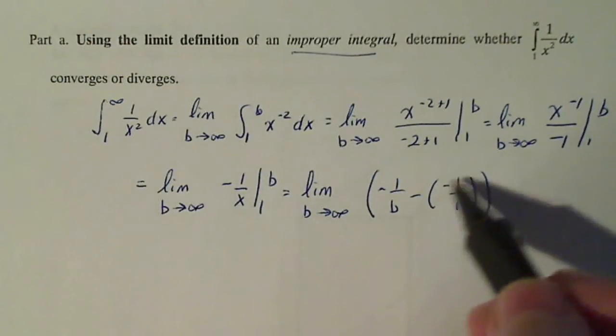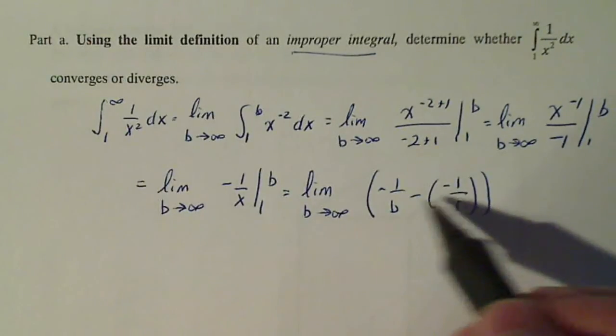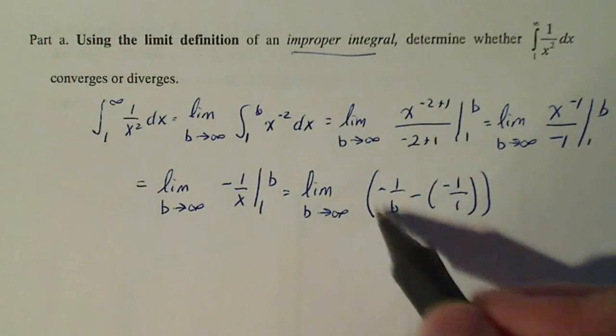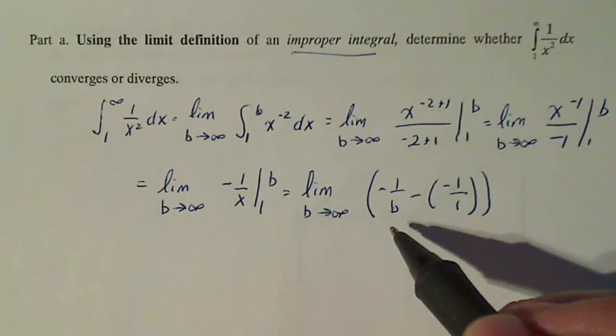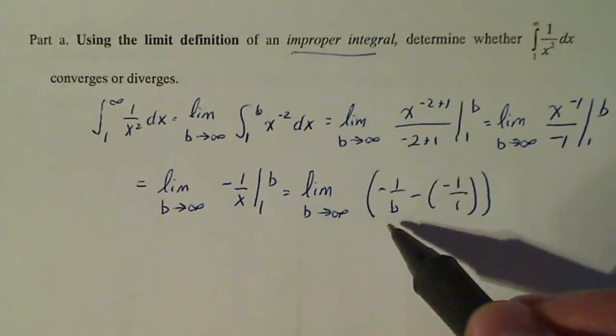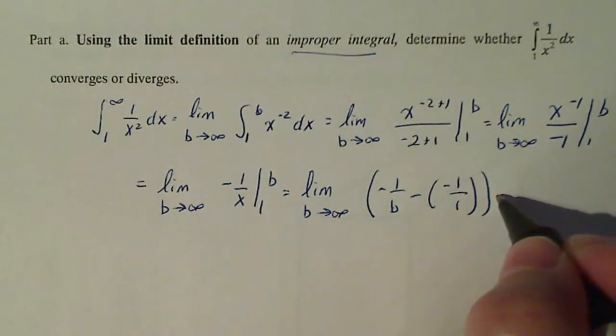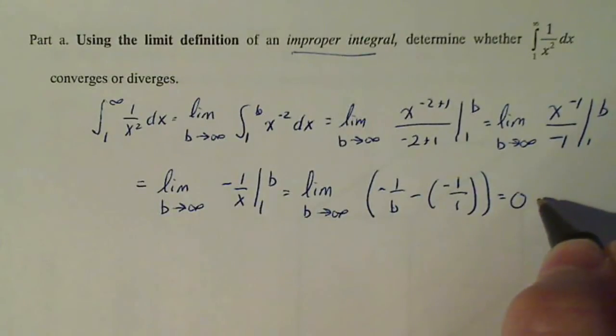Well, this guy here is just negative one or plus a negative one. But this I have to think about: if b is getting larger and larger, what happens to that fraction? It's like one over 10, one over 100, one over 1000. Well, that fraction is getting smaller and going to zero. So I can say that this is equal to zero plus one, which is equal to one.